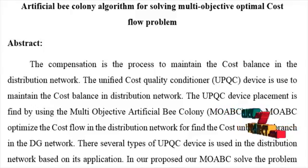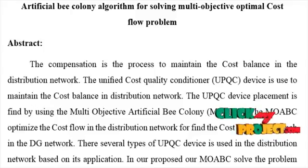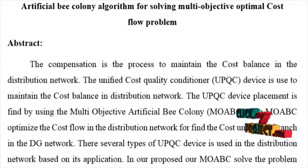The unified cost quality conditioner UPQC device is used to maintain the cost balance in distribution network. The UPQC device placement is found by using multi-objective artificial bee colony, MOABC. The MOABC optimizes the cost flow in the distribution network to find the cost unbalance branch in the DG network.